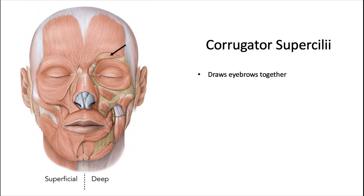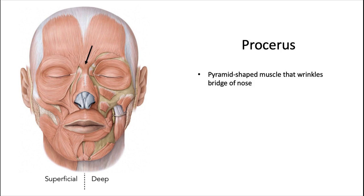The corrugator superciliae draws the eyebrows together to furrow them. The procerus is a pyramid-shaped muscle that wrinkles the bridge of the nose, also involved in a frown.